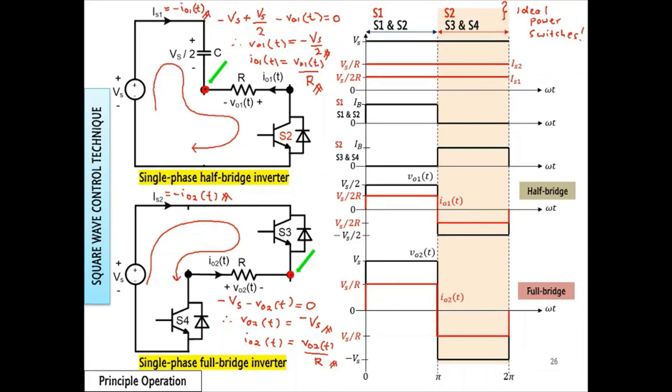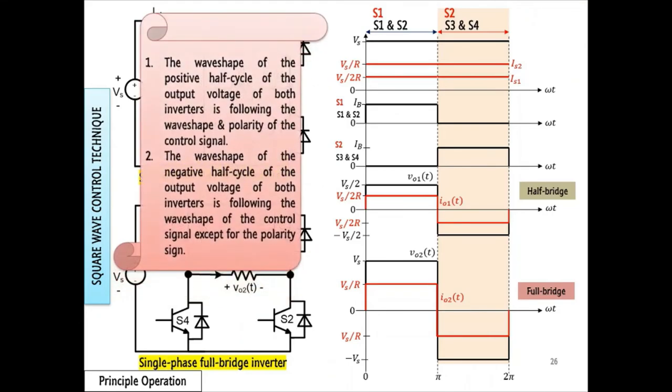Next, we will compare the output voltage waveform to the wave shape of the control signal. As we can see, the wave shape of the positive half cycle of the output voltage is following the wave shape and the polarity of the control signal.